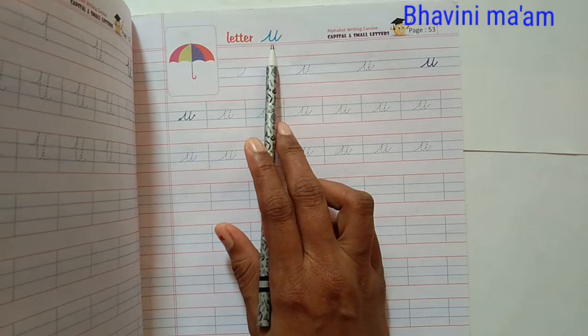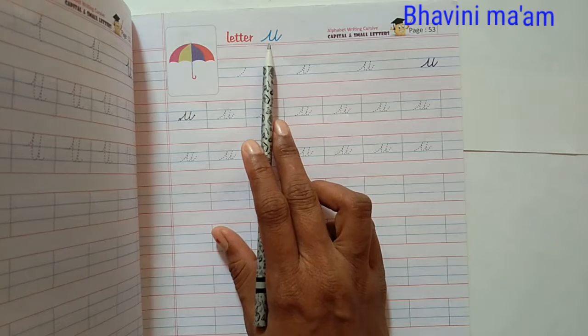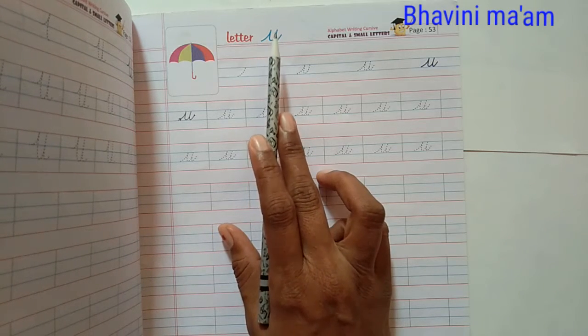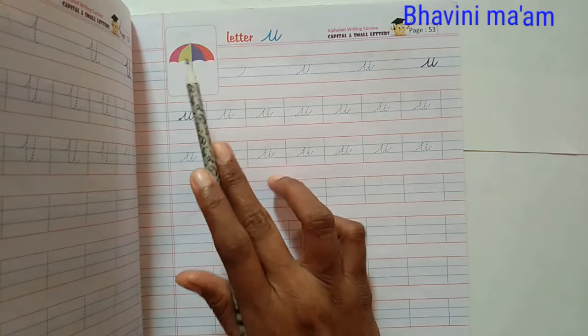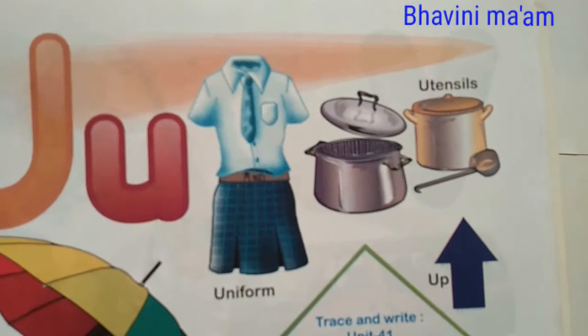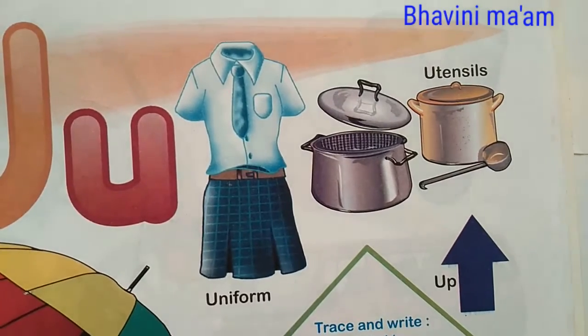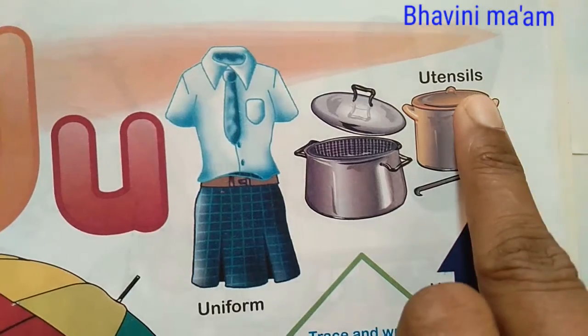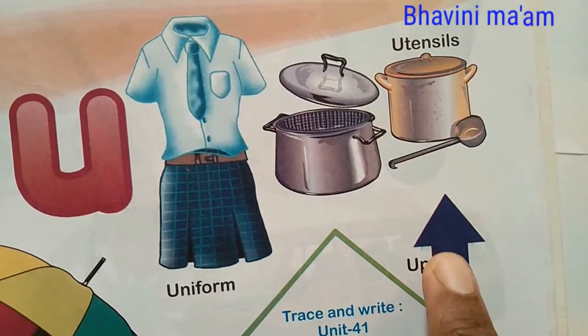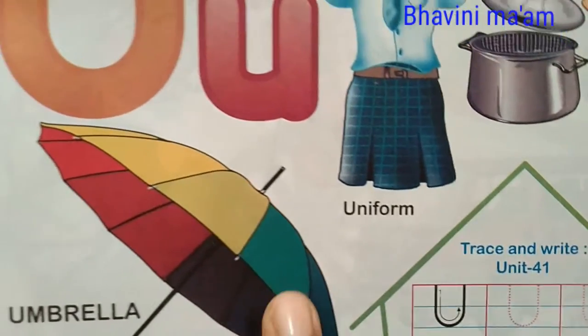Letter U. We have practiced until the letter T so today we will write letter U and U for Umbrella. I am showing you some pictures. Which picture is this? Uniform and this utensils. U for Up and U for Umbrella.